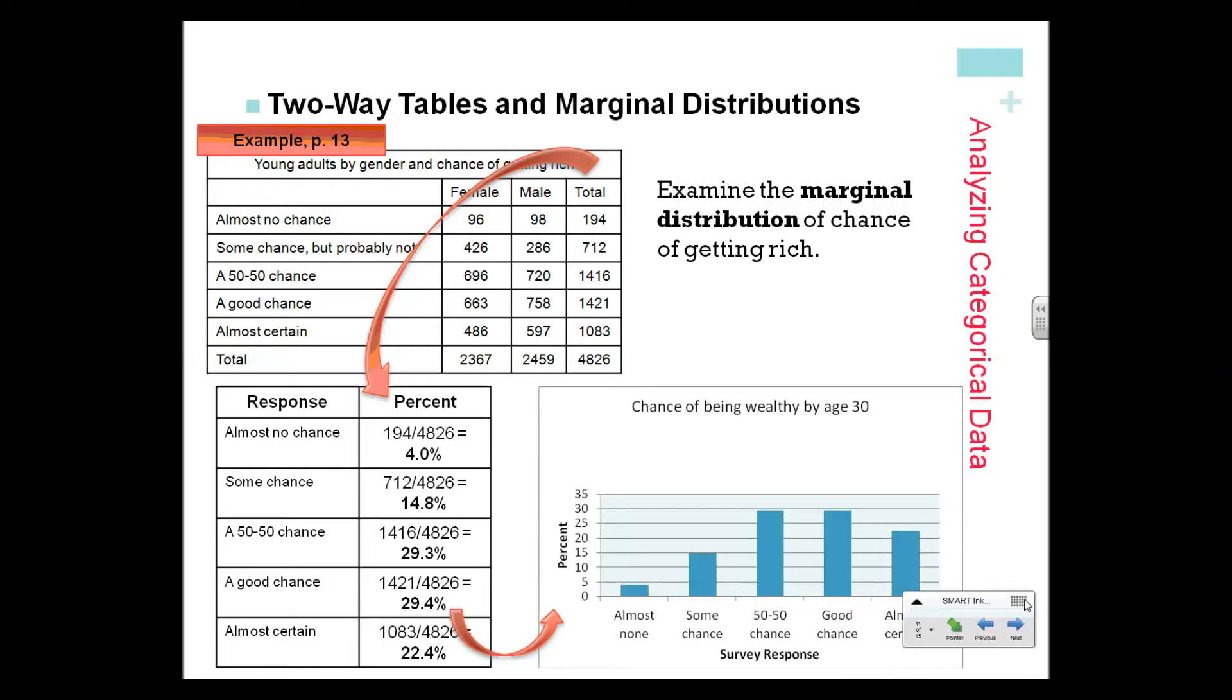To graph categorical data, we're going to usually put it in a bar graph. Notice they're separate. When you're talking about a bar graph, make sure you don't use words of shape like mounded or symmetric or skewed to the left, skewed to the right.